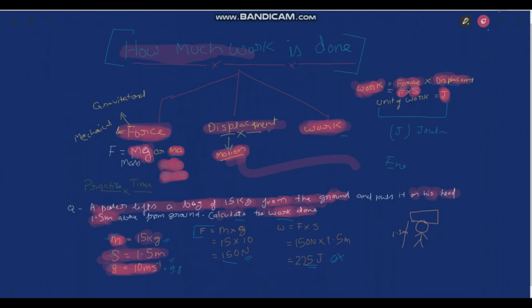Now directly we can't find work because we don't know what is the force being applied here. So for the force, we have to find first the force. F is equal to M into G, here the formula is written. So F is equal to M into G, M is 15 kg, G is 10, which is a constant.